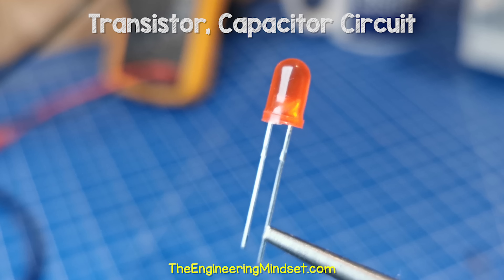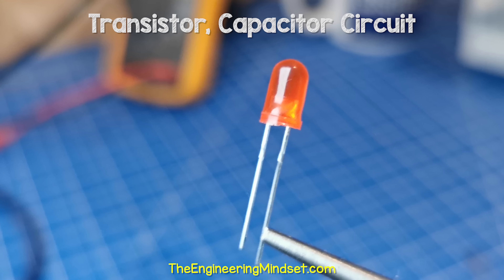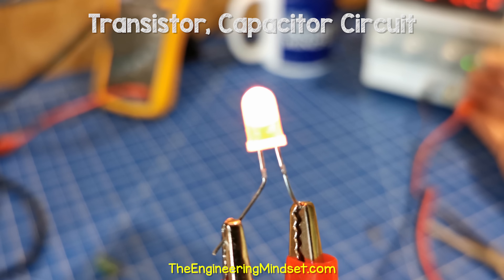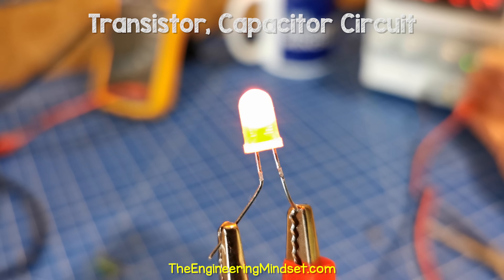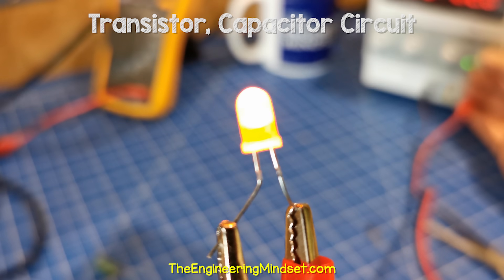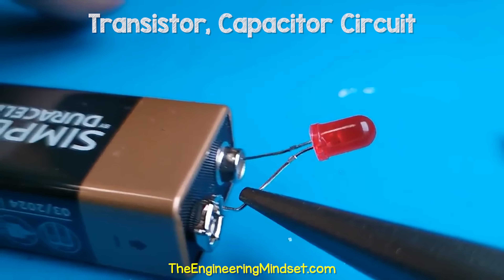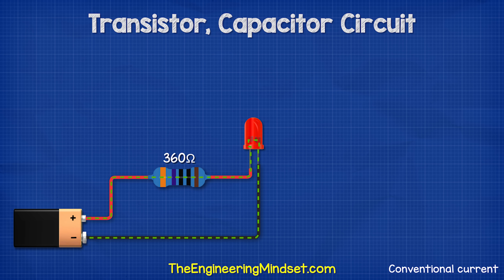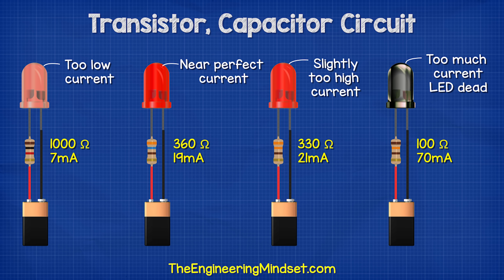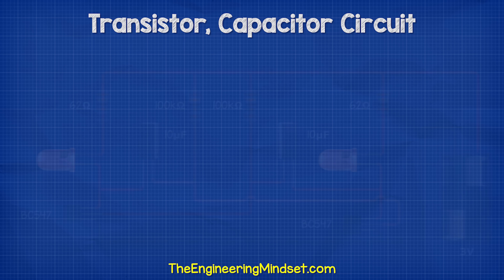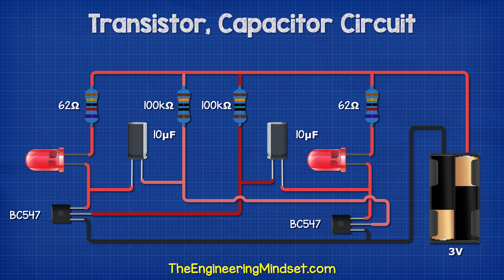Then we use some LEDs, which basically produce light when electrons pass through them. These are very sensitive to current and will be destroyed if too many electrons are allowed to pass through them. So we need to connect a resistor to protect them. The resistor can also control how brightly the LEDs shine.